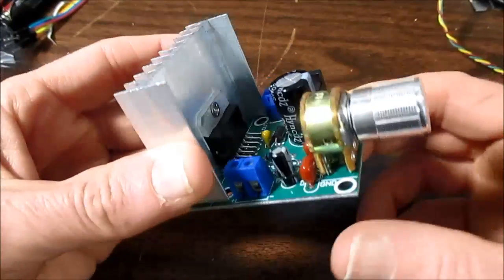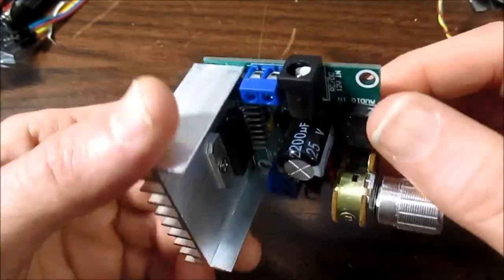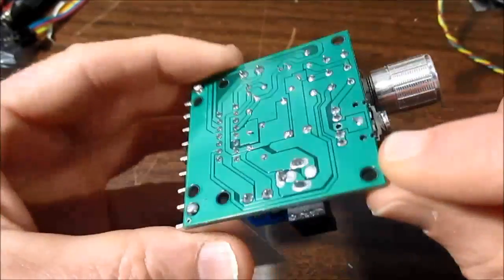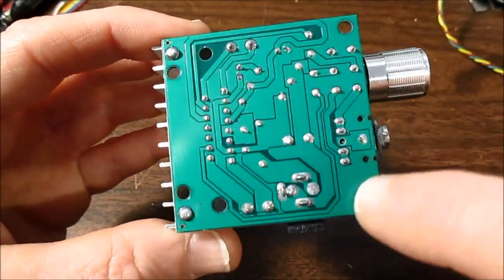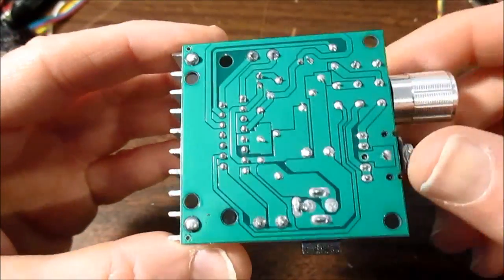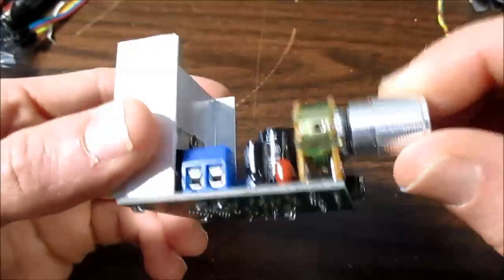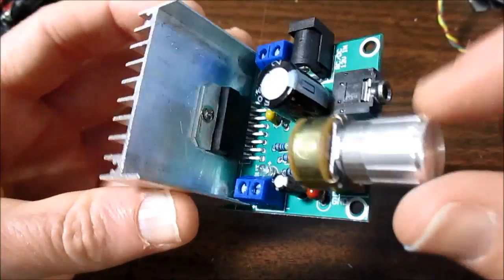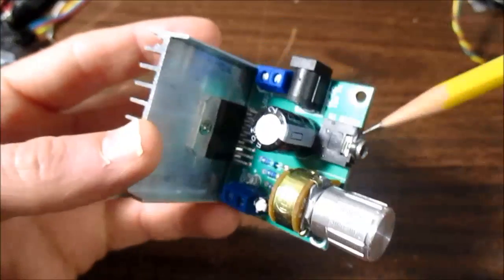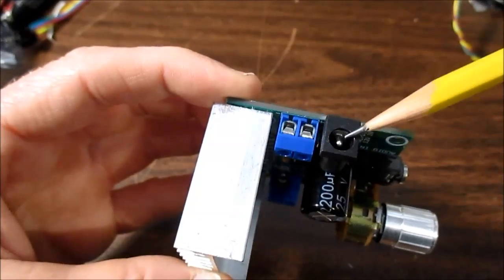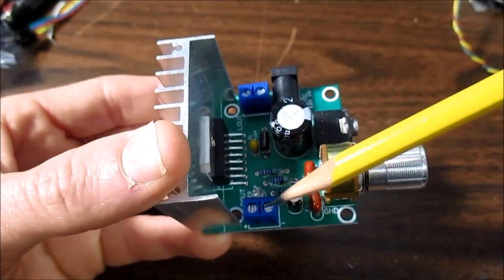Has a nice heat sink on it and the board seems to be well laid out. Has a ground plane on the top and a pretty well flooded in ground that goes in between all the spaces on the bottom. It has a volume control, input jack, barrel type power supply and the output terminals for each channel.